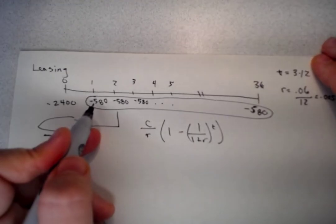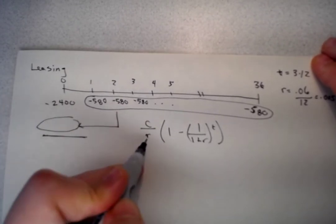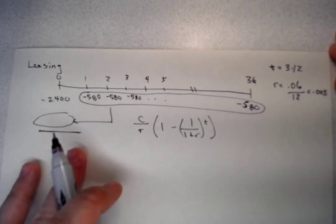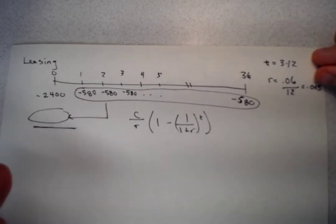The payment is $580, which is C. R is going to be 0.005. There's no G.